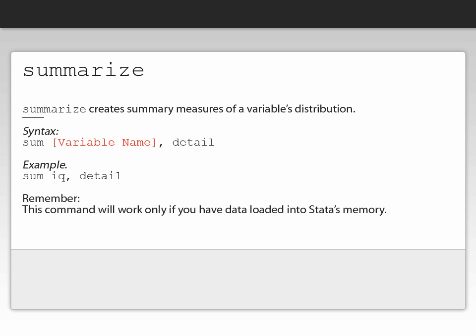To summarize a variable, we type in the command sum, S-U-M, space, and the variable name, comma, detail. For example, if I had a variable named IQ and I wanted to summarize it using the sum command, I type in sum, space, IQ, comma, detail.